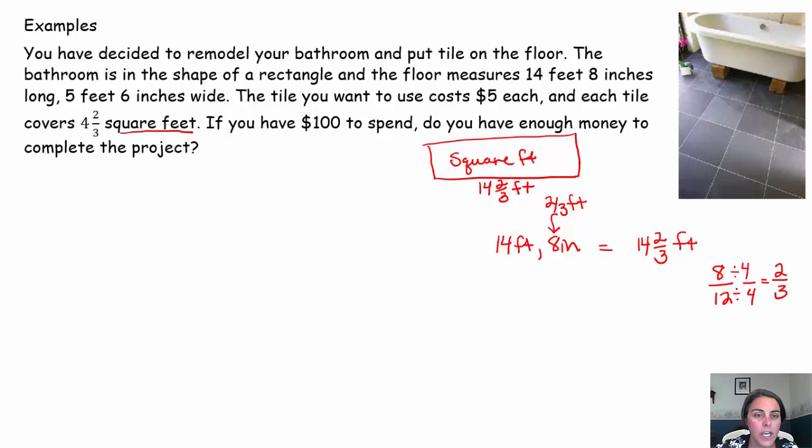I also dealt with the width being 5 feet 6 inches. Now hopefully for many of you, you already know 6 inches would be half a ruler, so half a foot. So this is actually 5 and 1/2 feet. But if you're uncomfortable, you can always do 6 inches out of a total of 12 inches because there's 12 inches in a foot. Divide numerator and denominator by 6. 6 divided by 6 is 1. 12 divided by 6 is 2. And that will show you why 6 out of 12 is 1/2. So 5 and 1/2 feet is the width.